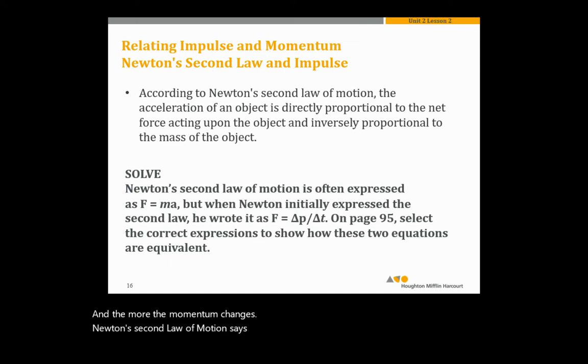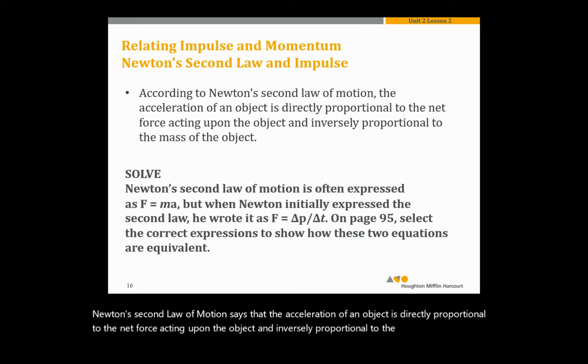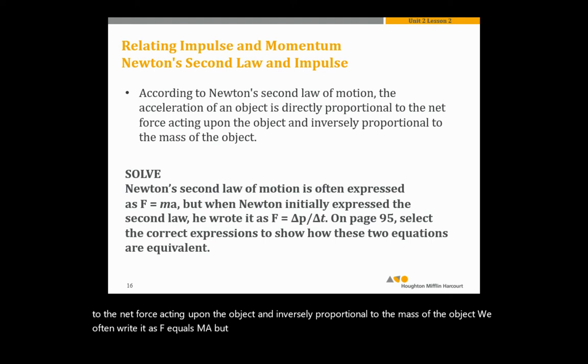Newton's second law of motion says that the acceleration of an object is directly proportional to the net force acting upon the object and inversely proportional to the mass of the object. We often write it as F equals ma, but Newton actually wrote it as F equals delta P over delta T. Force is equal to the change in momentum over the change in time.